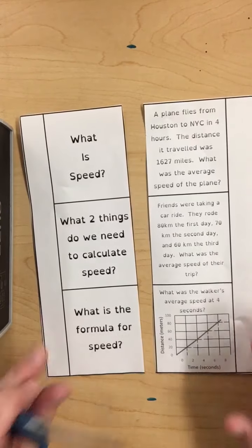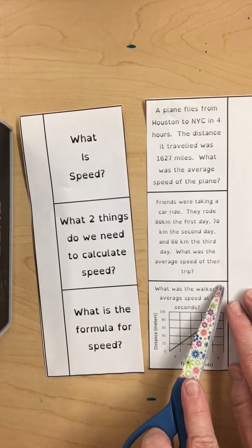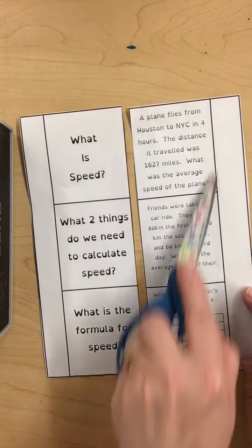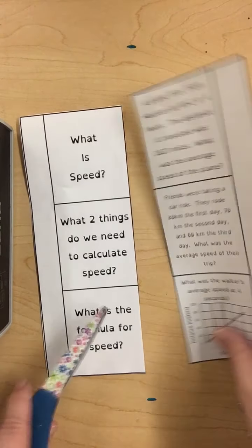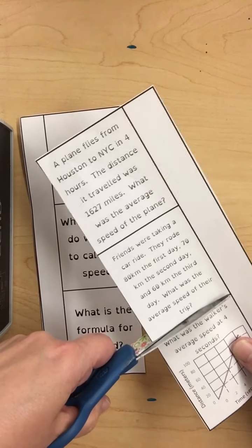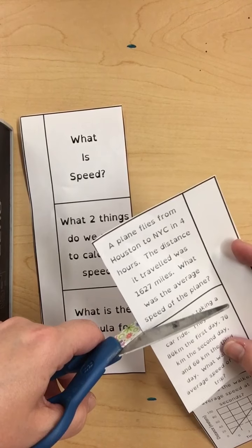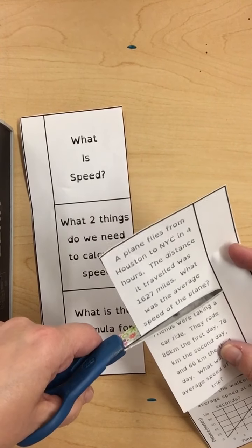Okay, just like that, we have two strips. Now, we're going to cut across on these solid lines, stopping at this line right here, okay? So, cut across, stop at the solid line. Across, stop at the solid line.